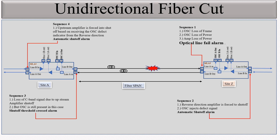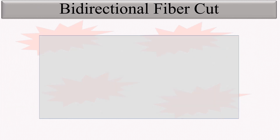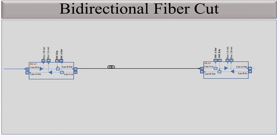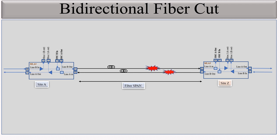You now know what the optical line fail alarm is, on which amplifier it appears, what is the reason for it, and on which port it appears. Now let's look at the bidirectional fiber cut. You can see here the same setup — site A to site B — and both fibers are disturbed, both fibers are broken. On this amplifier it will receive loss of frame, loss of power, and amplifier loss of power, and on port number 8 of this amplifier the optical line fail alarm will appear.